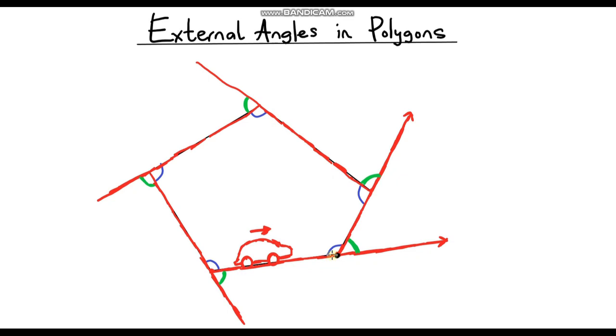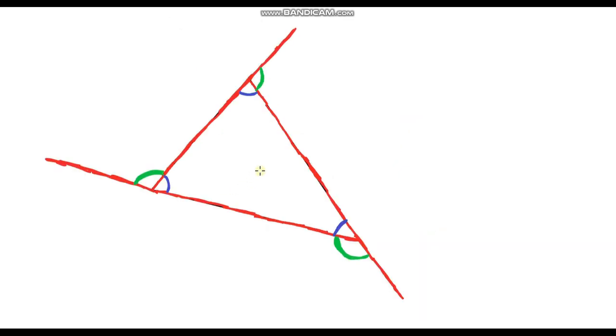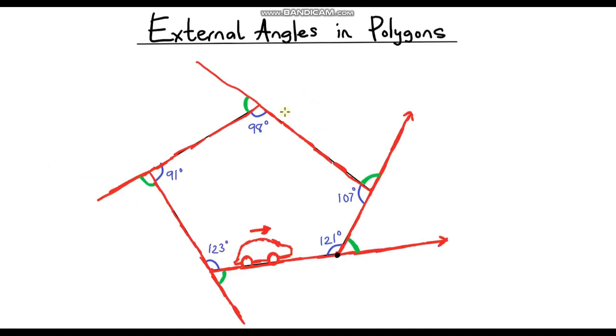I'm just going to delete this and use a different shape. What I've drawn here as you can see is a triangle, and again you can see that the external angles and the internal angles always sum to 180 degrees. Now I've just gone back to my original pentagon because it seemed a shame to waste all of this work that I just did.